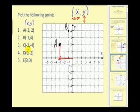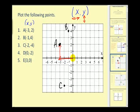Point C: the x-coordinate is negative 2, so we go left 2 units, and the y-coordinate is negative 4, so we go down 4 units to point C. D has the coordinates (0, negative 2). This 0 tells us we do not go left or right at all. We stay right at the origin, but with the y-coordinate of negative 2, we need to go down 2 units.